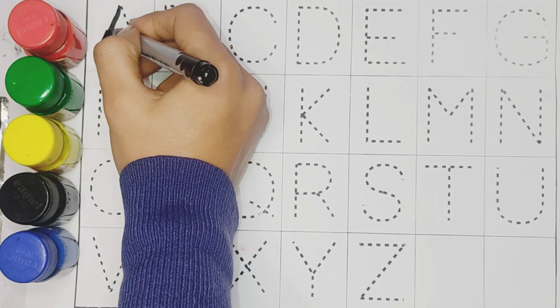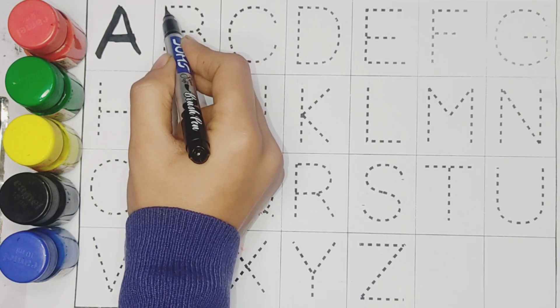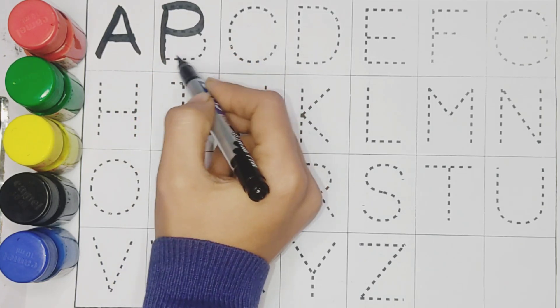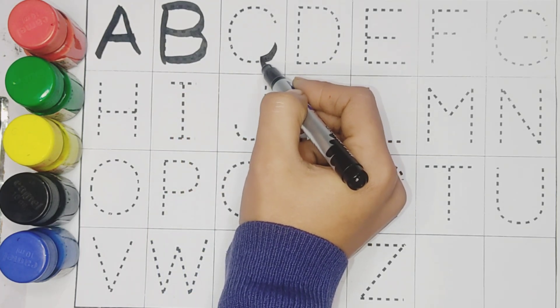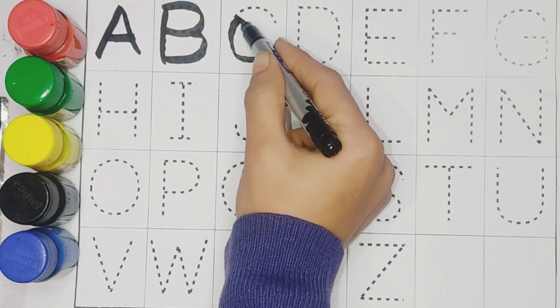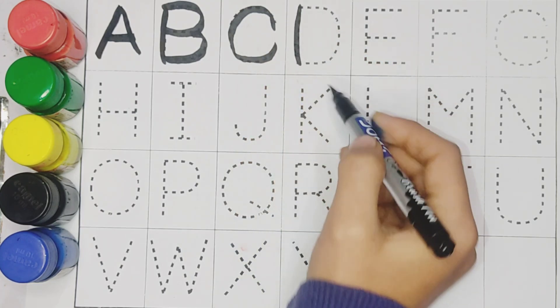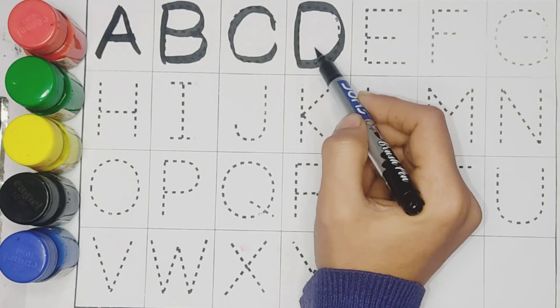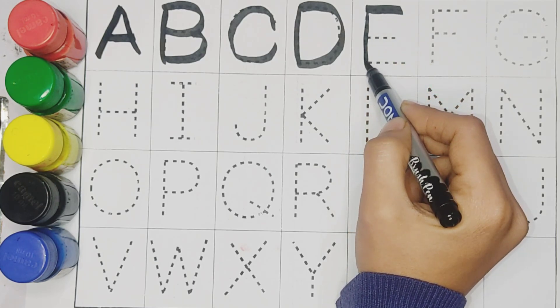A. A for Apple. B. B for Ball. C. C for Cat. D. D for Dog. E. E for Eagle.